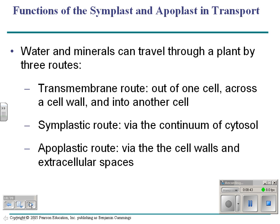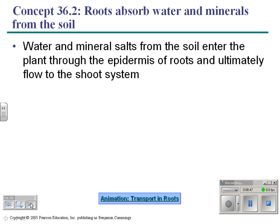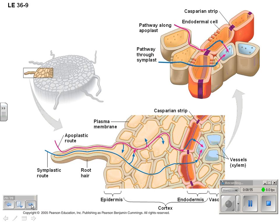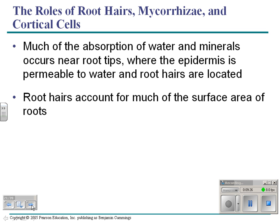Water and minerals enter the plant through the roots, through the epidermis of the roots. Water enters through root hairs or the root itself, going from high potential in the soil to low potential in the plant cell. As water goes into the root and travels into the vessels, you get less water remaining in the root. Roots are good at this because root hairs increase surface area, giving more surfaces for water to enter.